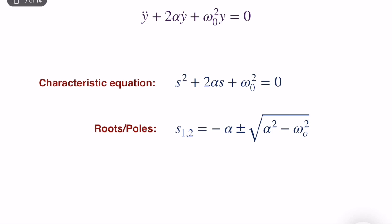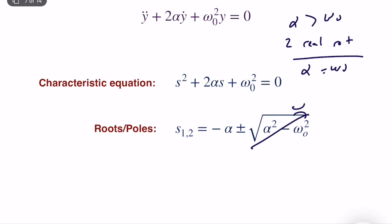Alpha can be greater than omega-zero — in this case we have two real distinct roots. Alpha can equal omega-zero — giving a repeated double root. Or alpha can be less than omega-zero — giving two complex conjugate roots. Let's analyze these cases one by one.